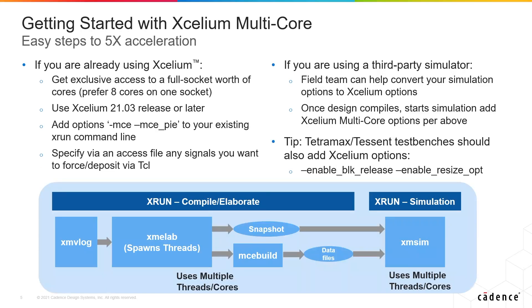Accelium multi-core is relatively easy to run. If you're already using Accelium, since this technology is built into Accelium itself, all you need to do is get full access to a set of cores — full access is important so cores can communicate efficiently. Use release 2103 or later, and add two options to your command line: -mce to enable the technology, and -mce_pi to get simple profiling of where time went for performance tuning. If you're going to use TCL to force or deposit any signals, specify those upfront via an Accelium access file, otherwise those signals may be optimized out. Signals forced inside the testbench will automatically be kept forcible. That's it — run and accelerate.